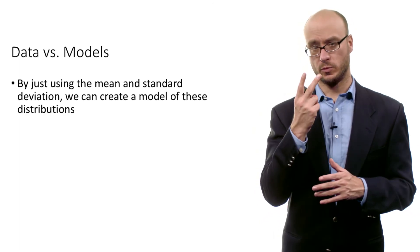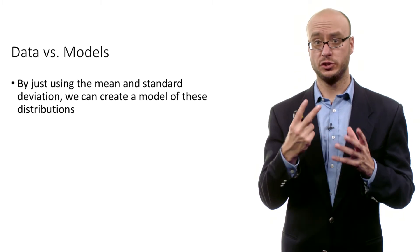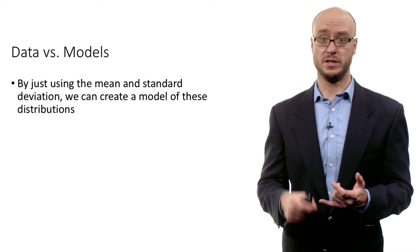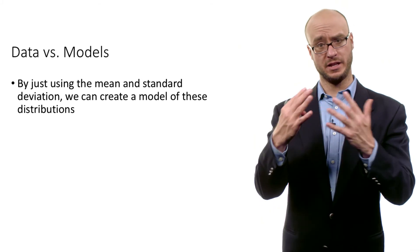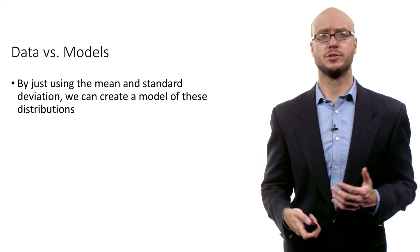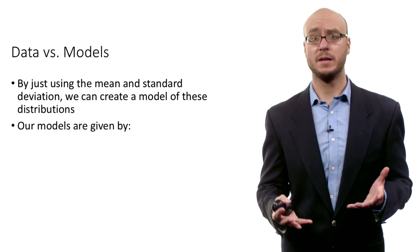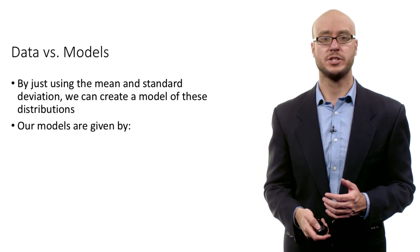The important point is that what's useful about the normal distribution model is you only need two bits of information. You need the mean and the standard deviation, and then you have kind of a model for that distribution. You don't need 50 data points, you just need two bits of information.